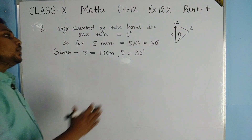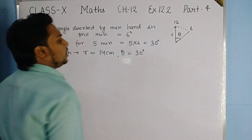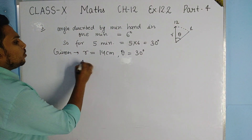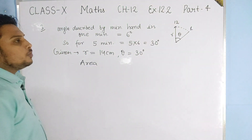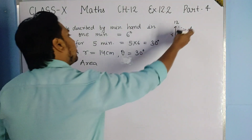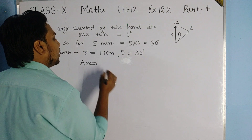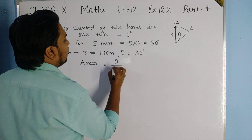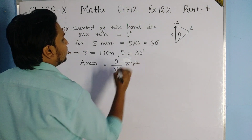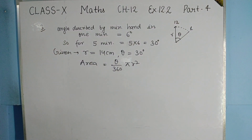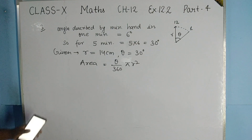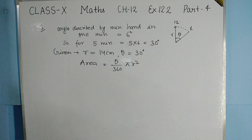The area swept by the minute hand forms a sector shape. Just apply the sector formula: theta/360 × πr². Note this as a hint and solve it yourself to find the value. Pause the video and note it down.